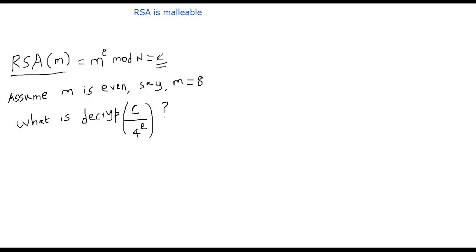How is c obtained? The c is nothing but m power e. So you have m power e, and we are dividing it by 4 power e. Dividing means multiplicative inverse.